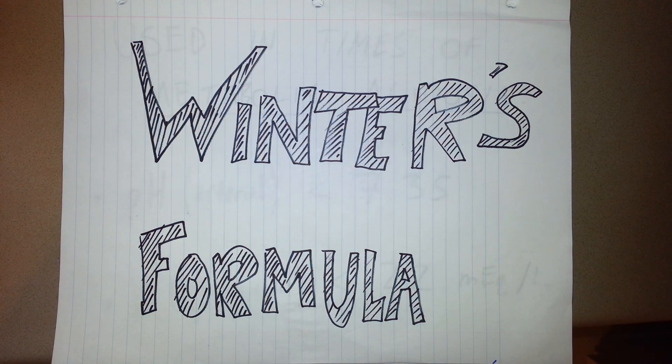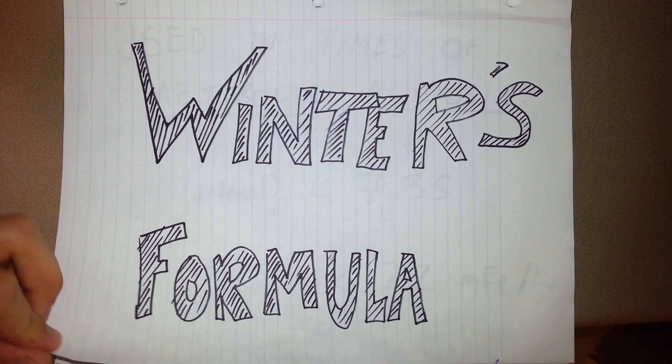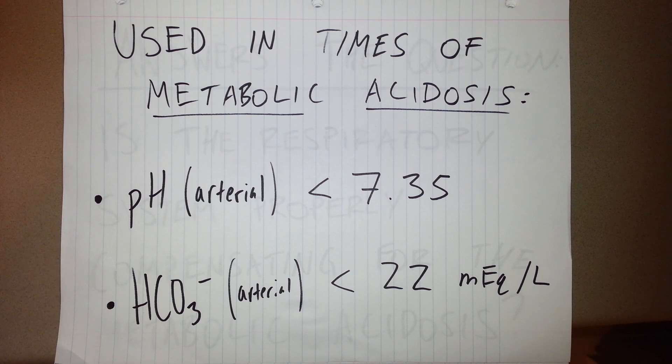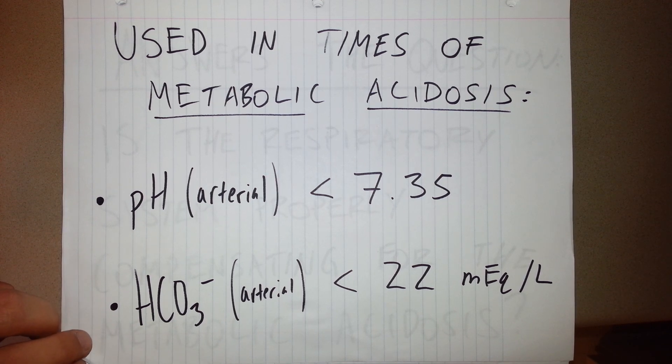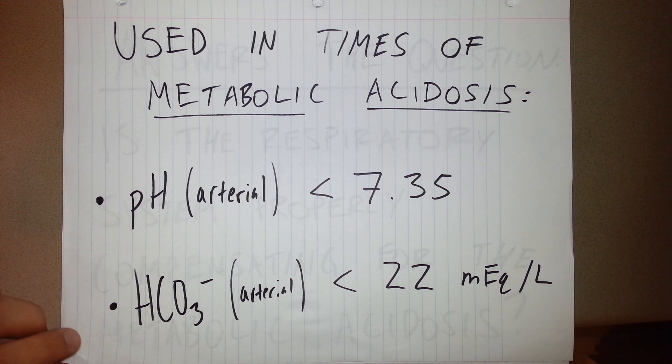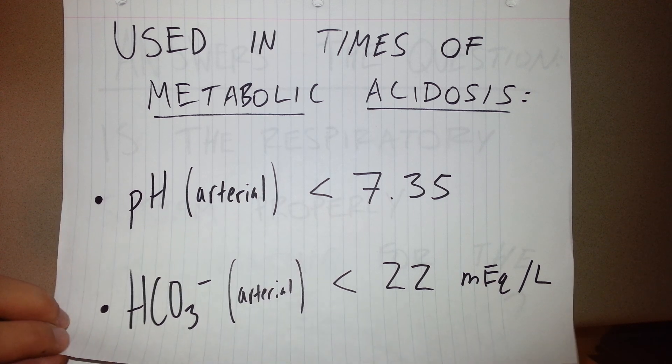This video will include an introduction to Winter's formula as well as one example of it being used. Winter's formula is used in times of metabolic acidosis, which just to refresh your memory is when the arterial pH is less than 7.35 and the arterial bicarbonate level is less than 22 mEq/L. Some of these values may vary depending on what institution you're working with, but for the purposes of this video these are the values we'll be using.